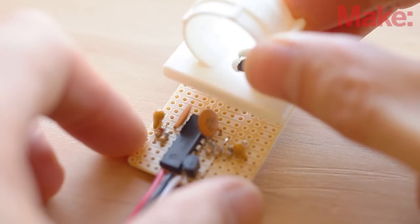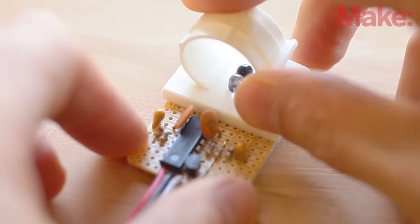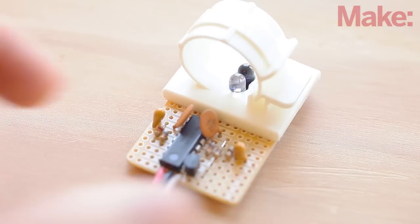Now you can remove the adhesive film from the base of the cable clip and fix it to the component side of the PCB over the emitter and detector.